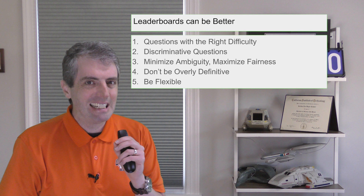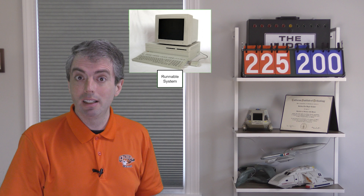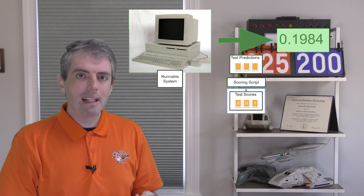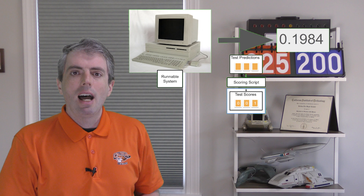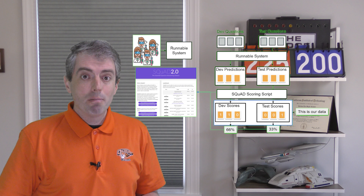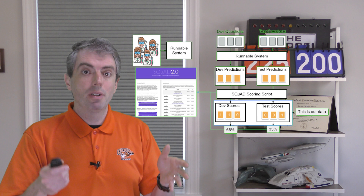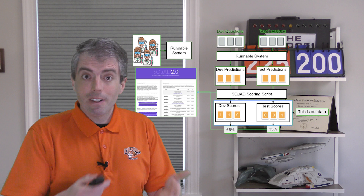A system comes in, usually as a docker container. You run it on some questions, it gives you answers to those questions, and you automatically evaluate whether the answers it produced are correct or not, and out comes a score. If you get the high score, you win. I'm going to focus on question answering today because I have examples ready, but I'm sure you can see how this would apply to any natural language processing task where you're producing answers that might be difficult to judge correctness for.